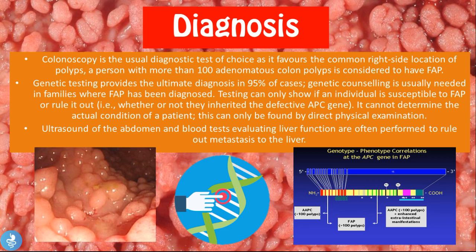Genetic testing provides the ultimate diagnosis in 95% of cases, and genetic counseling is usually needed in families where FAP has been diagnosed. Testing can only show if an individual is susceptible to FAP or rule it out — meaning whether or not they inherited the defective APC gene. It cannot determine the actual condition of the patient, which can only be found by direct physical examination.